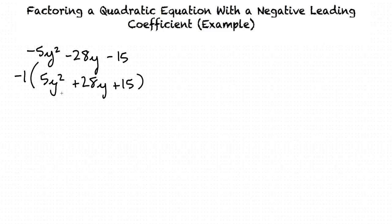And so now we can factor 5y² + 28y + 15 and only worry about that. Now in this method, we want to start by finding two factors of 5 that we will use for our final factors. The only two factors of 5 are 1 and 5.